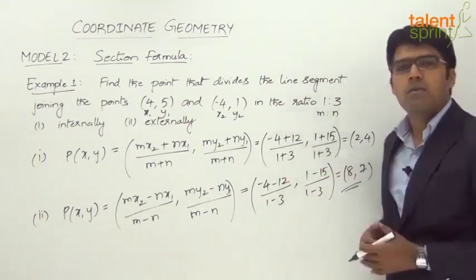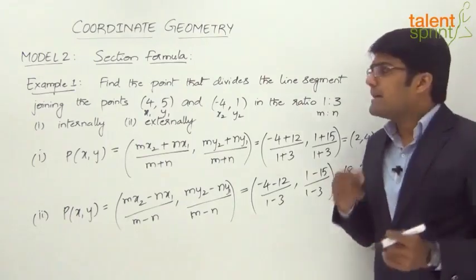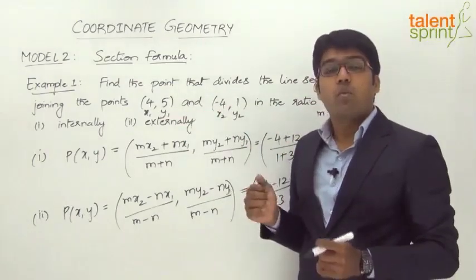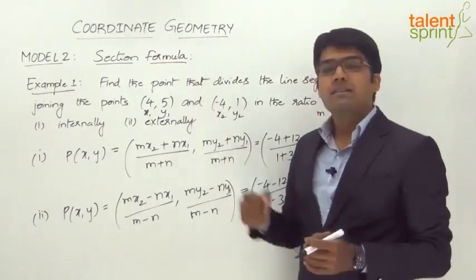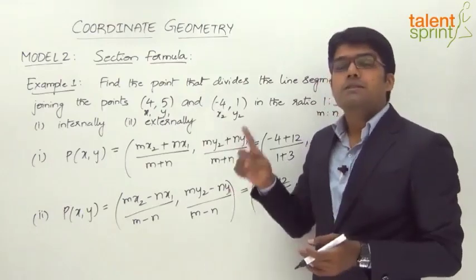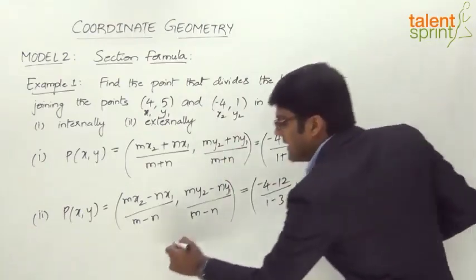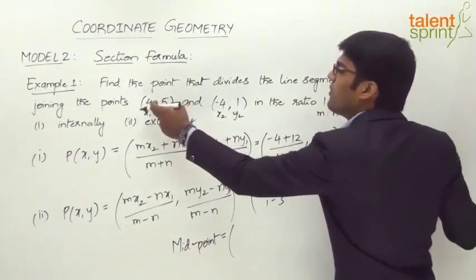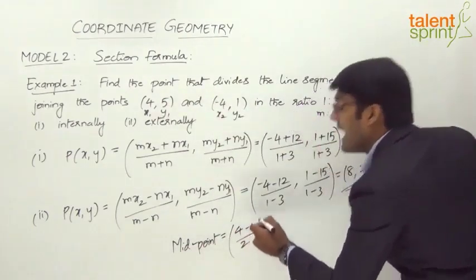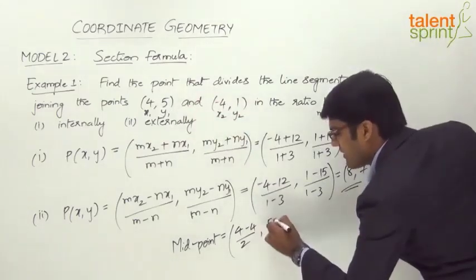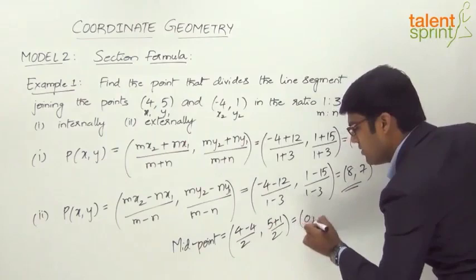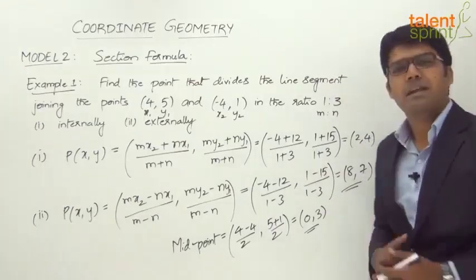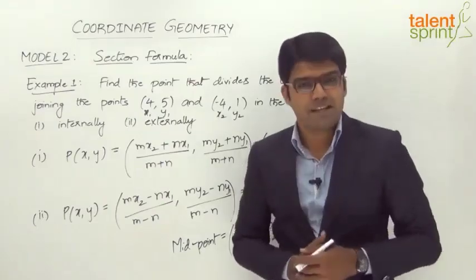Simply substitute the values in the given formula and arrive at the required answer. Likewise, if the question says find the midpoint of the line segment joining these two points, we should take (x1 + x2)/2 and (y1 + y2)/2. So that midpoint can be calculated as (4 + (−4))/2 and (5 + 1)/2, which is equal to 0 and 3. So (0, 3) will be the midpoint of the line segment joining the points (4, 5) and (−4, 1). This is how we can easily answer questions based on the section formula.